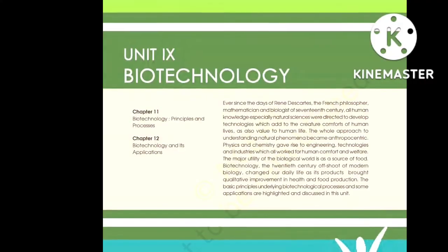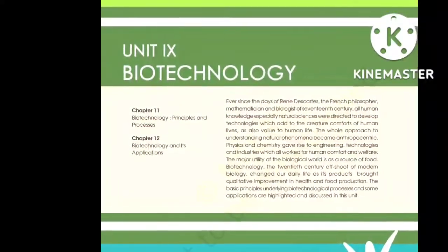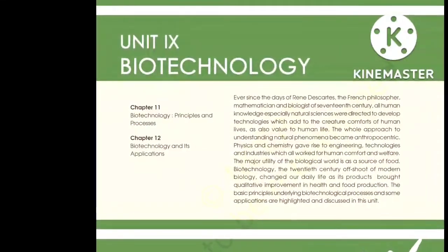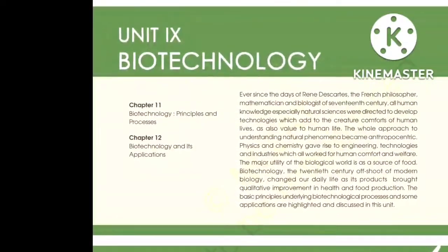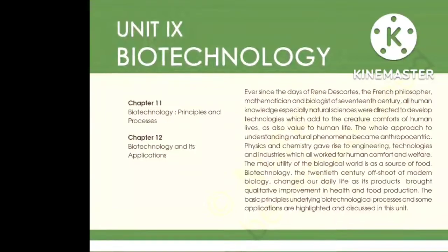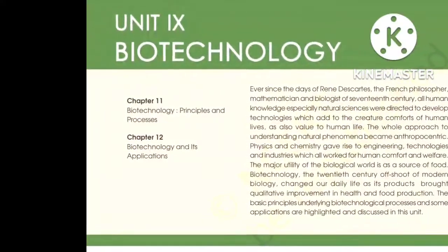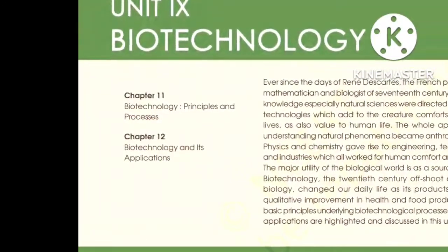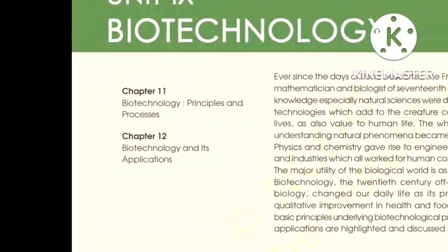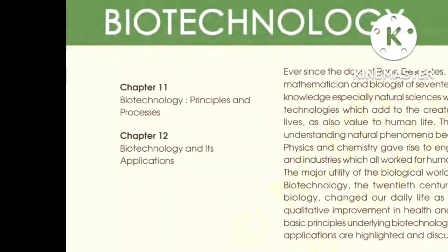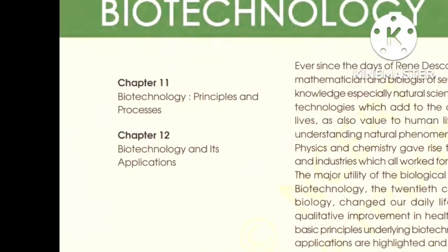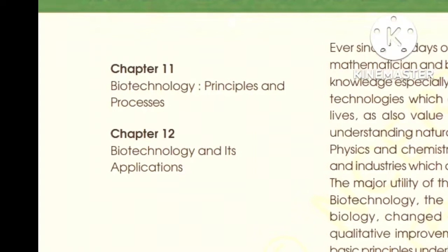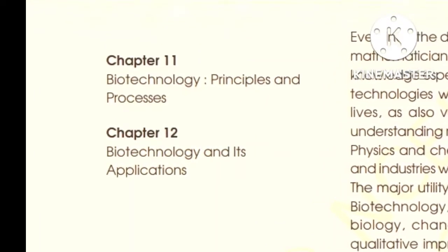All the processes used in food and the processes used in biotechnology are related to our first chapter, chapter number 11: Biotechnology Principles and Processes. In this chapter, we are going to see all the applications — the biological applied form — and we are going to understand the biological research used which we apply to food and other products, learning more about the processes. This is all about the introduction of the unit.